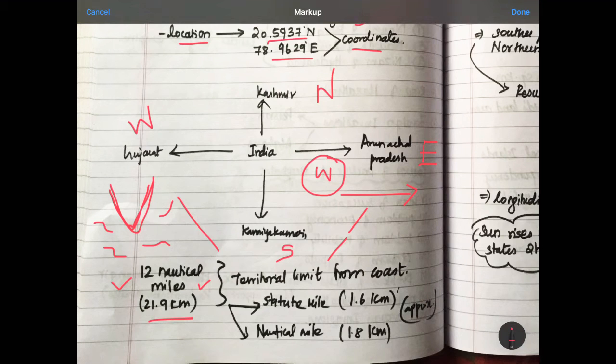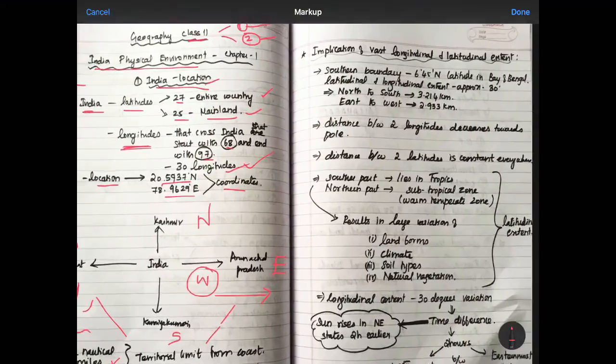Another scale, another unit is statute mile, like nautical mile. One statute mile is nothing but 1.6 kilometer, whereas one nautical mile is equal to 1.8 kilometer.